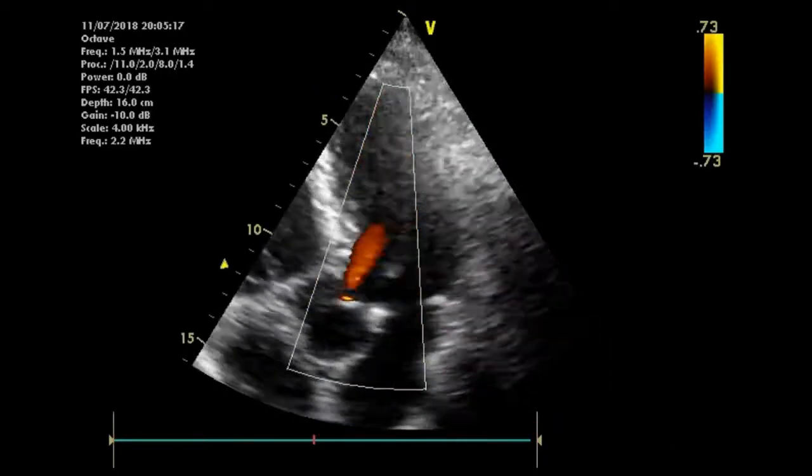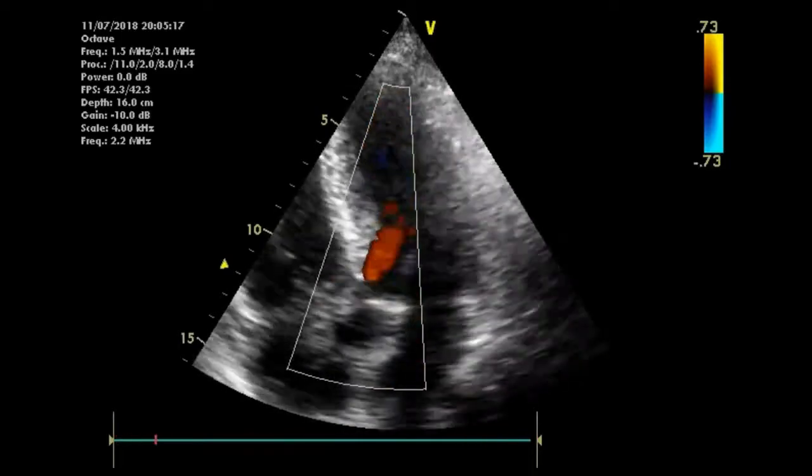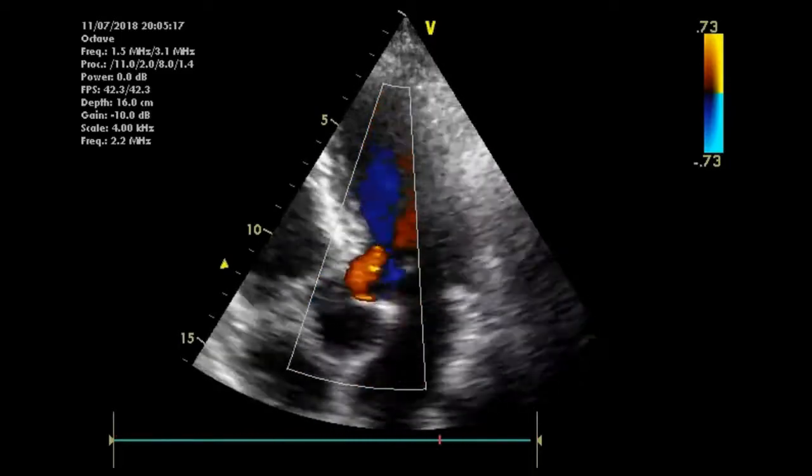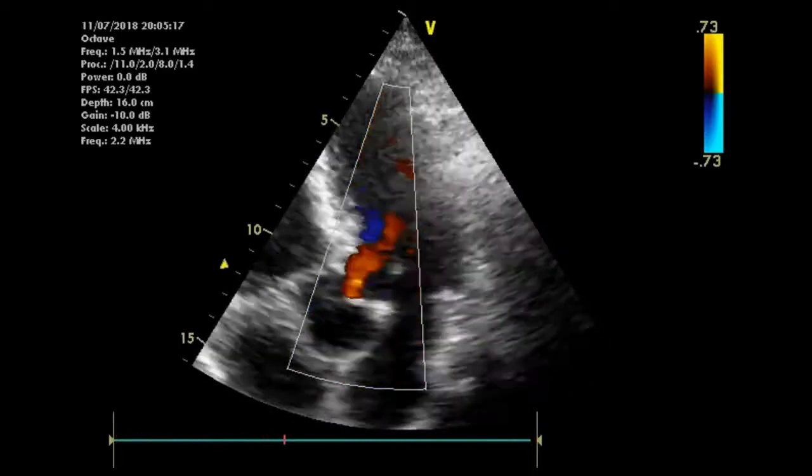This is an example of a patient with aortic dissection, in which the dissection caused acute aortic regurgitation. It's mild in this case, though.